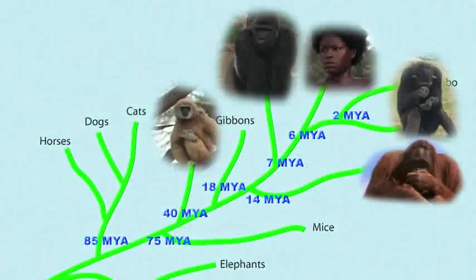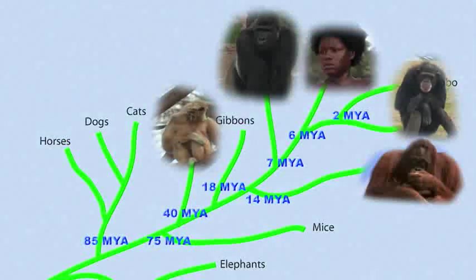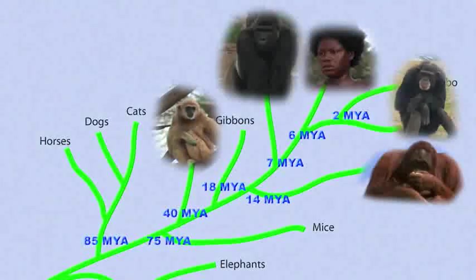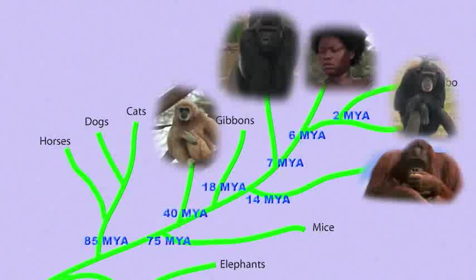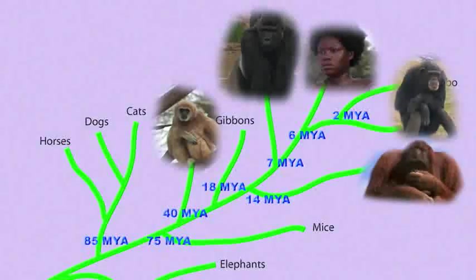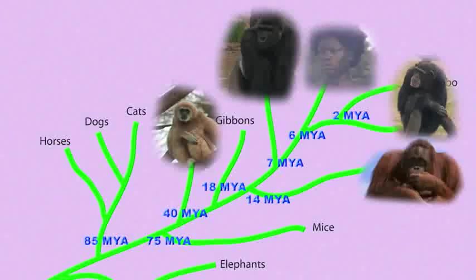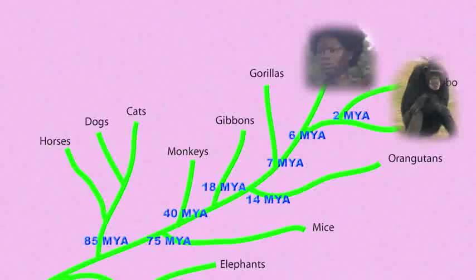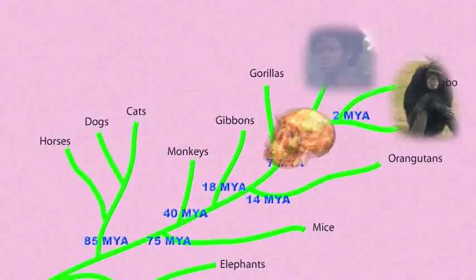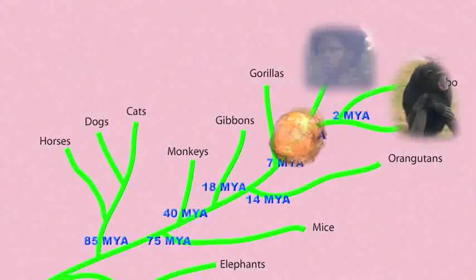A common misconception is that some modern species are descended from other modern species. This is rarely the case. Instead, closely related modern species evolved from a common ancestor, that is, neither one nor the other. Humans did not come from chimps. Both humans and chimps came from a creature that had more primitive features than either modern humans or modern chimps.